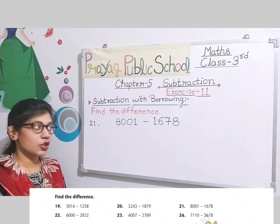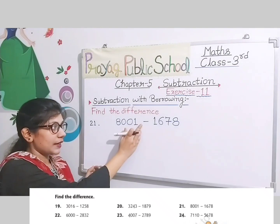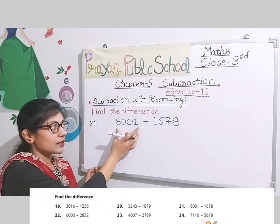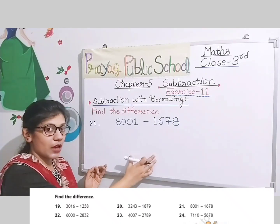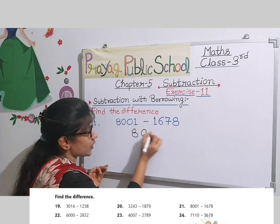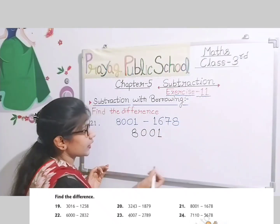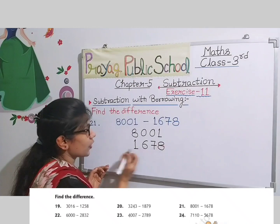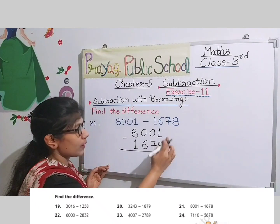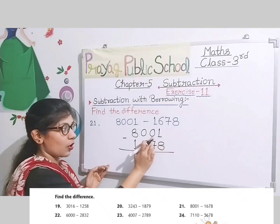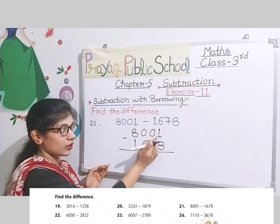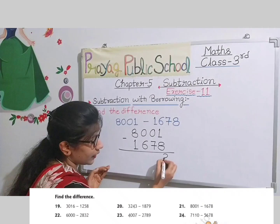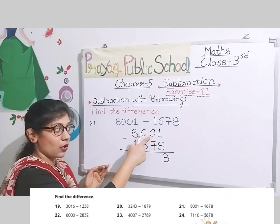Let's solve this question: 8001 minus — subtraction. 1 mein se 8 ka subtraction possible nahi — yaha 2 zeros hain. Ab 8 se borrow ho ga. 11 minus 8 kya bacha? 9, 10, 11 — 3.